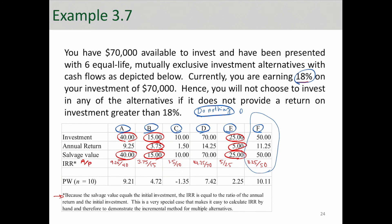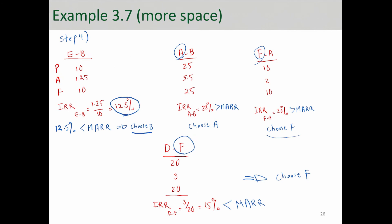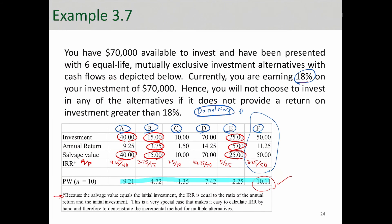You can verify this choice by looking at the present worth — alternative F has the largest present worth among all alternatives, confirming the same decision reached through incremental IRR analysis. We will also look at this problem in Excel to see the behavior of these alternatives and implement such calculations, providing more insights in our analysis.